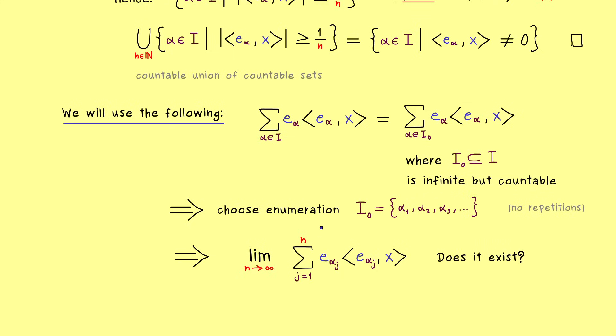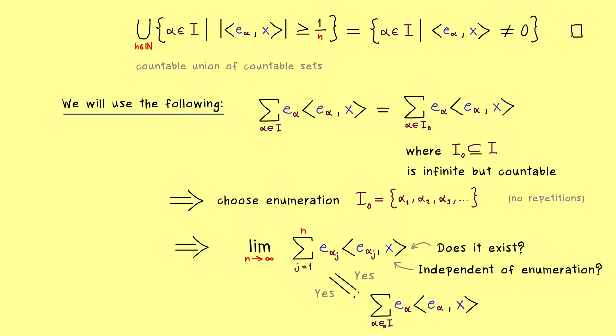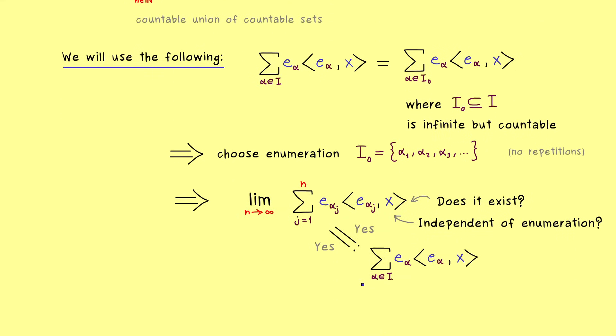So you see we have two questions to answer here. First, does this limit exist for any enumeration we can choose for I_0? And second, is this limit then independent of the chosen enumeration? So if we get 2 times yes, then our strange infinite sum is well defined. So only in that case we are allowed to use this strange notation for an element in our vector space X.